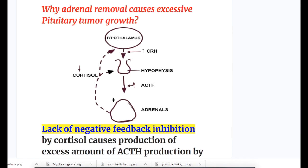Why does adrenal removal cause excessive pituitary tumor growth? Normally, cortisol has a negative feedback inhibition to suppress ACTH production. When cortisol is lacking after adrenalectomy, there is increased ACTH production from the pituitary gland, and the pituitary tumor grows, producing excessive amounts of ACTH.